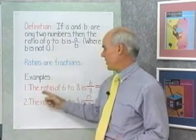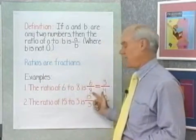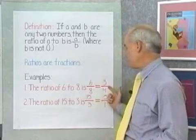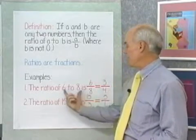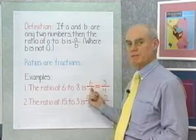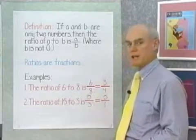For example, the ratio of 6 to 8 is the fraction 6 over 8, which we can reduce to lowest terms as 3 fourths.